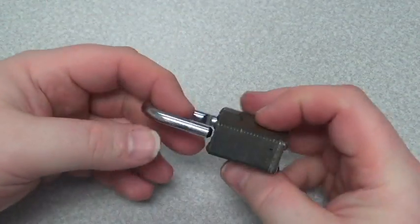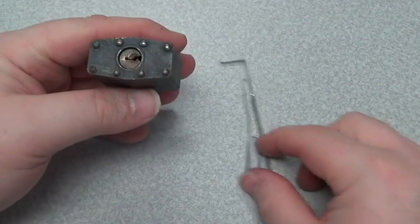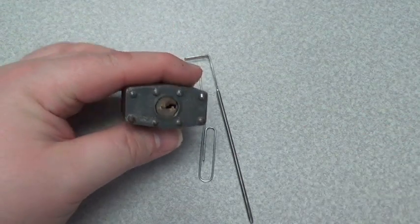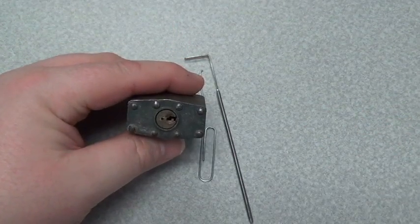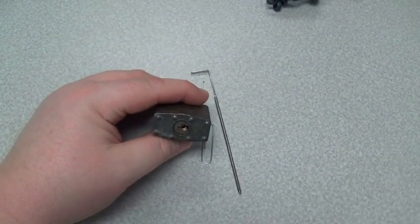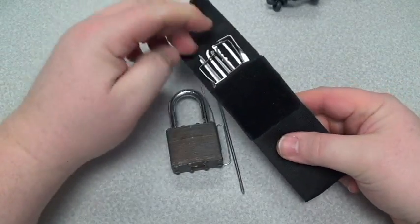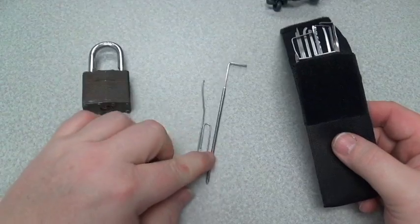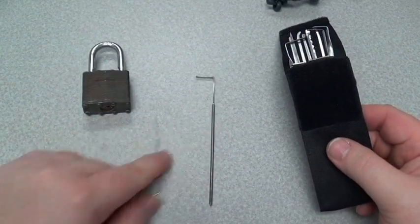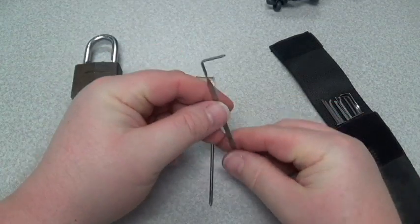So after I had done that and was able to get this off and picked it a few times, I thought why not start making a set of lock pick tools. I'm going to zoom the camera out just a hair here. There we go. So this is my basic kit that I've been working on.